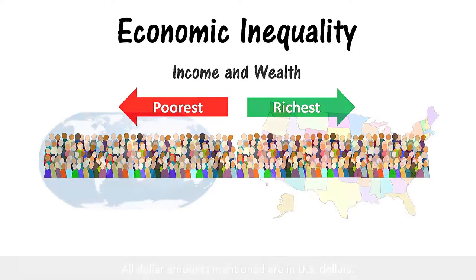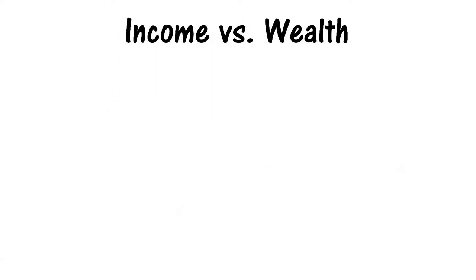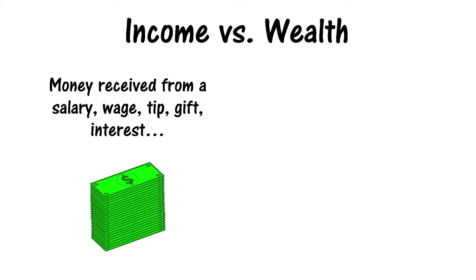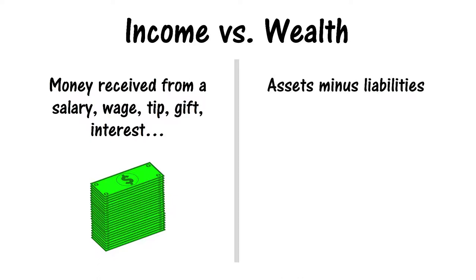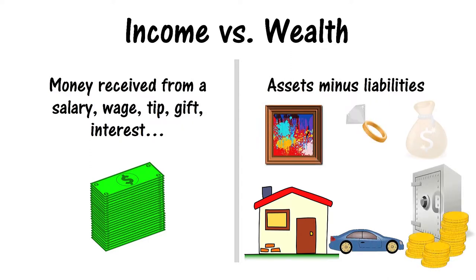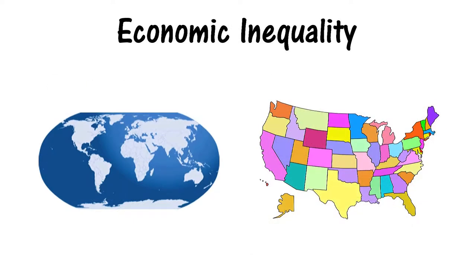Before examining the amount of economic inequality around the world and in the United States, let's examine the difference between income and wealth. Income refers to money received from a salary, wage, tip, gift, or interest earned on an investment or another source. Wealth refers to the value of assets minus liabilities — having things of value minus any debts. Wealth can include property like a house, car, artwork, and jewelry, as well as savings, a pension or retirement account, an investment like owning stocks or bonds, or something else of value.